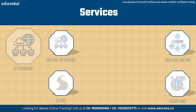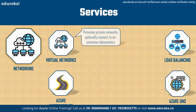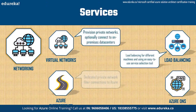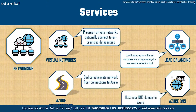Next is networking. After setting up virtual machines using the compute product, John needs networking to connect those machines so they can talk to each other and form a network. This product gives you the ability to set up virtual networks, dedicated connections, and gateways. It also provides services for traffic management and diagnosis, load balancing, DNS hosting, and network protection against attacks like DDoS.